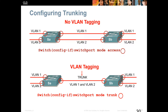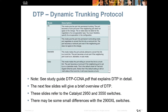Configuring our trunks: we have different link types. We should no longer be using ISL. We should be using access links for the VLAN and trunk ports between our switches. Regarding DTP — Dynamic Trunk Protocol — this has already been covered in your CCNA material, so you should already know the different modes and what they will negotiate.